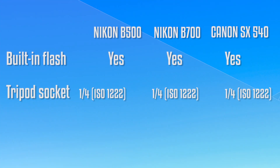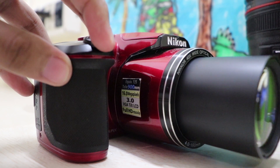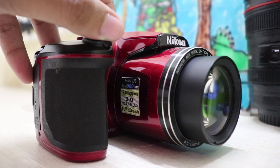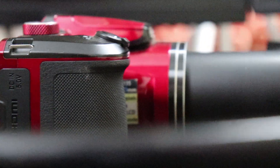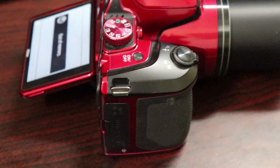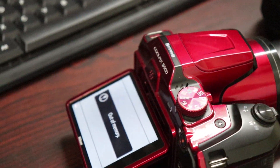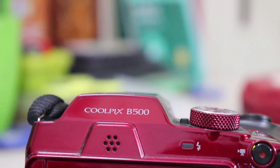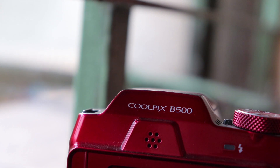All three cameras have a built-in flash. I have personally tested the Nikon B500 — you can shoot continuous video up to 1 hour 30 minutes on a full charge and click more than 700 photos on a single charge. The B500 uses four AAA batteries, which are lithium-ion.